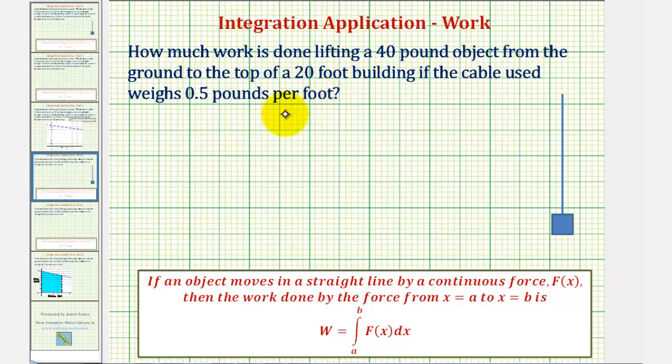Well, the force required to lift the object has two components. We have to consider the weight of the object, which is 40 pounds, but also the weight of the cable, which changes as the object moves upward. As the object moves upward, the cable shortens, and therefore the weight of the cable is less.